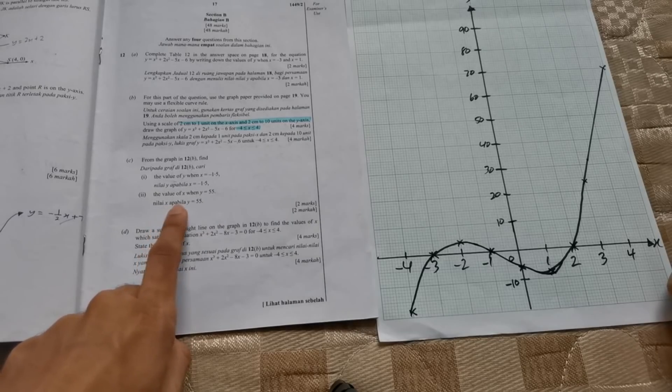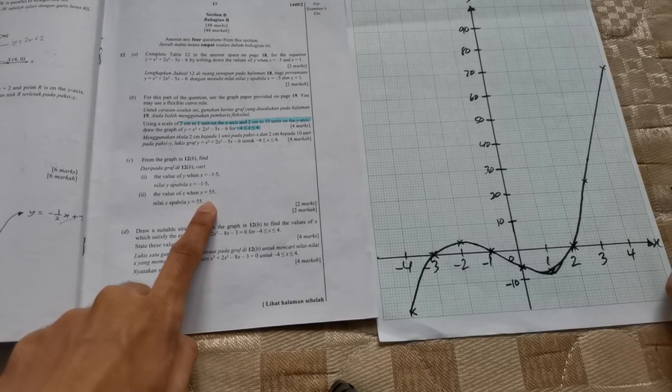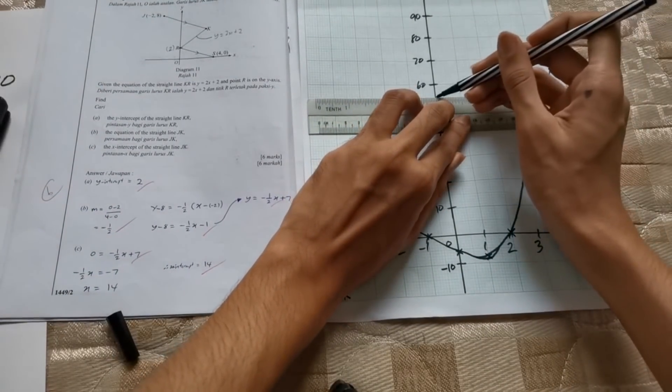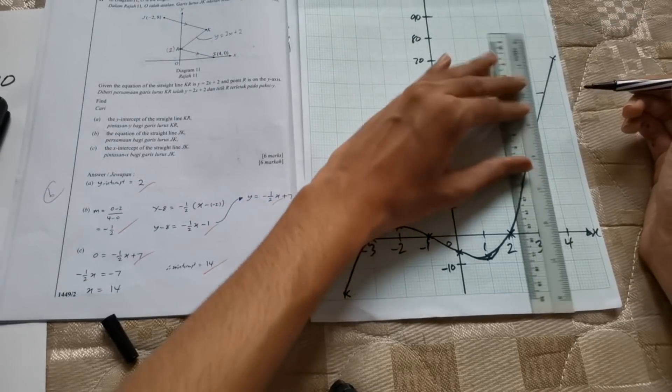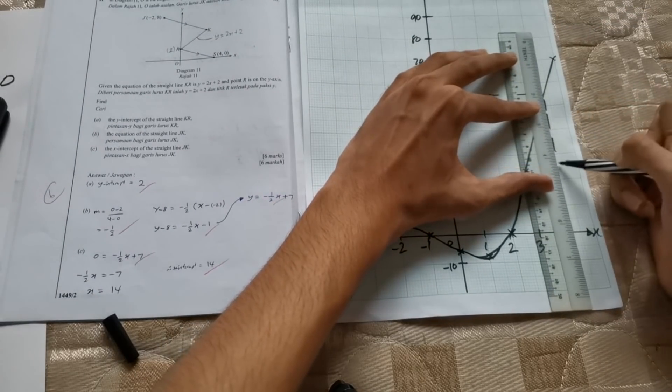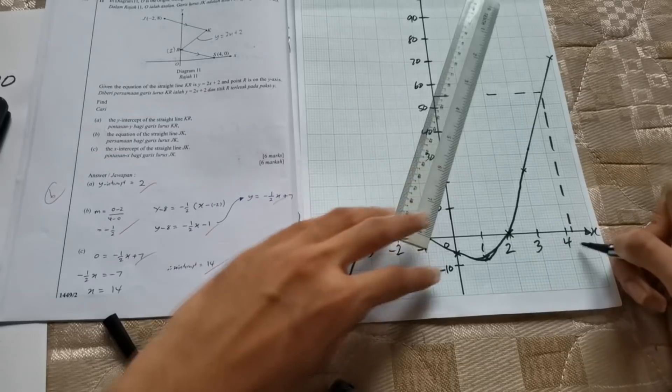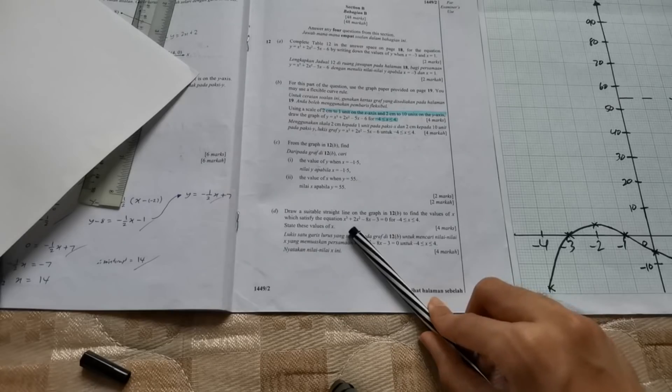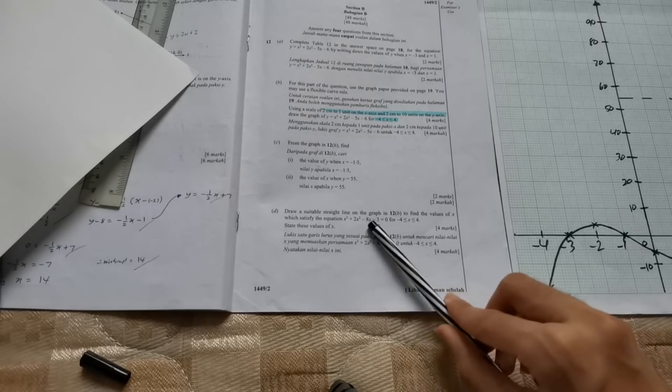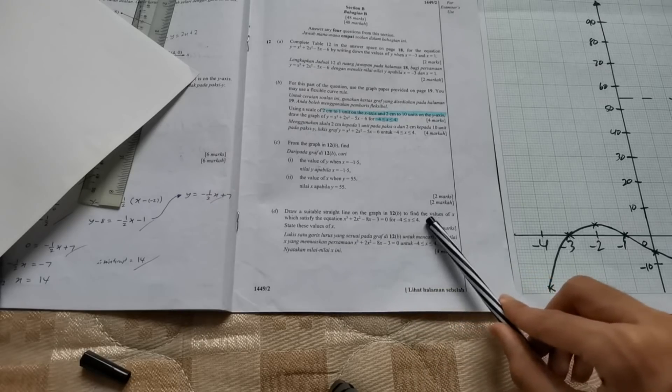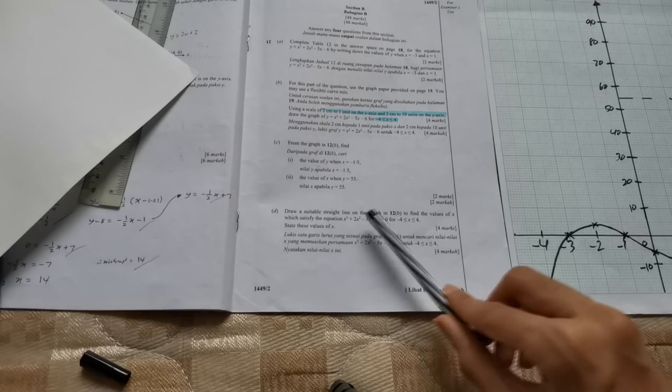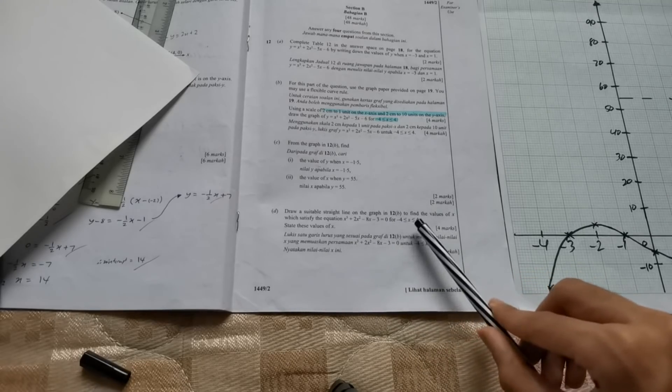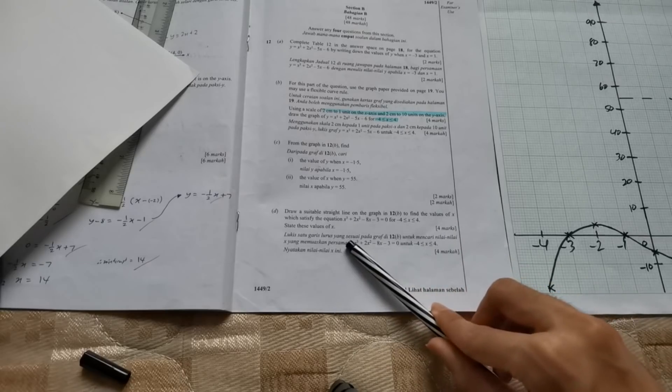So next question is, what is the value of x when y is equals to 55? So when y is equals to 55, use your ruler and draw a dotted line. A dotted line is very important. And you bring it all the way, and you'll get around 4.2. And then for the last question, draw a suitable straight line on the graph to find the values of x which satisfy the equation x cube plus 2x square minus 8x minus 3 equals to 0. State these values of x.